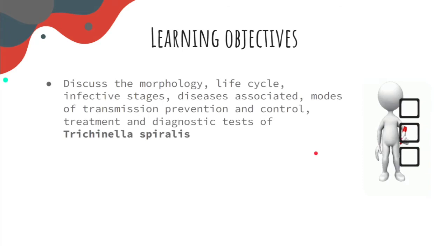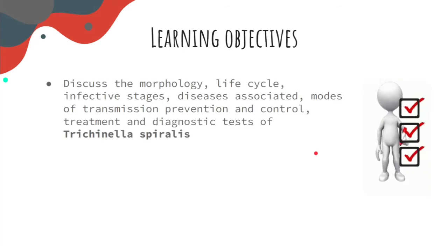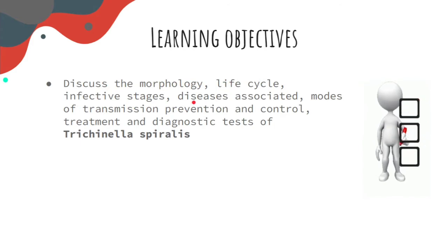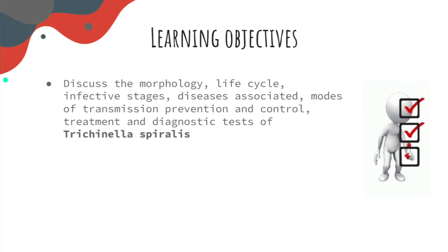Here are our learning objectives for today. Number one, we will be discussing about the morphology as well as the life cycle, the infective and diagnostic stages, disease associated, modes of transmission, prevention and control, as well as the treatment and the diagnostic test for Trichinella spiralis.